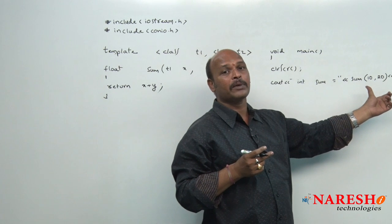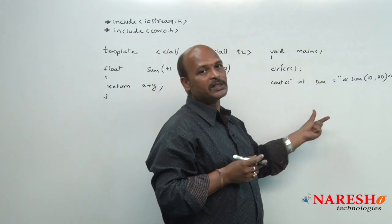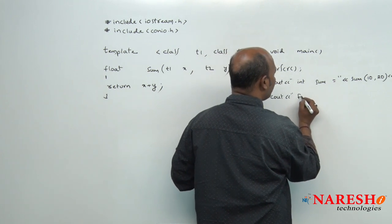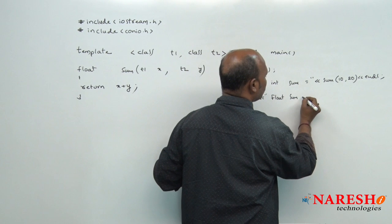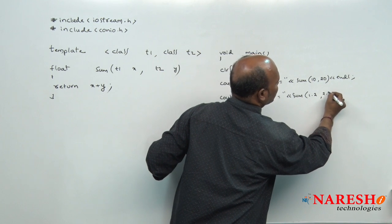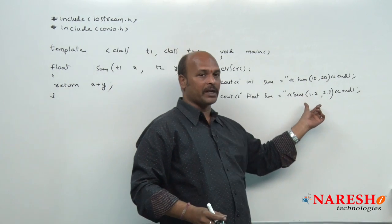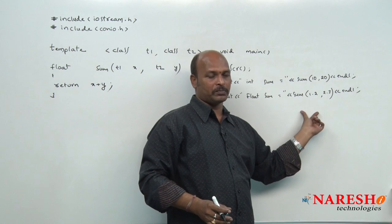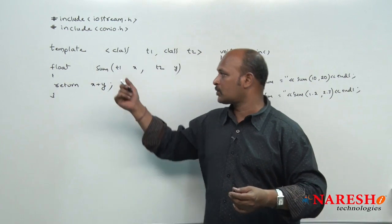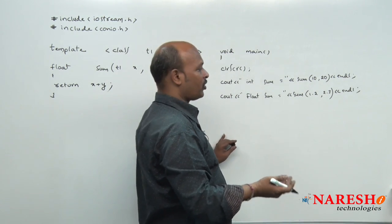Here we are sending same-type data elements and the answer is integer 30. Next, to send floats: cout << "float sum = " << sum(1.2, 2.3). This time both arguments are float, so T1 and T2 both become float, x and y are both float, and the return value is also float. The answer is 3.5.